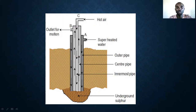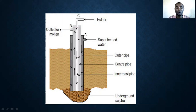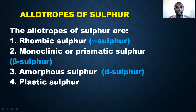The heated water goes down. You can see the movement — this is the path of the molten sulfur coming up. It then solidifies in the tanks. This is the overall setup for the extraction of sulfur.